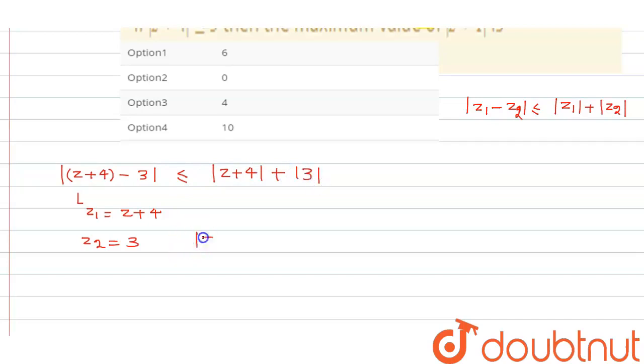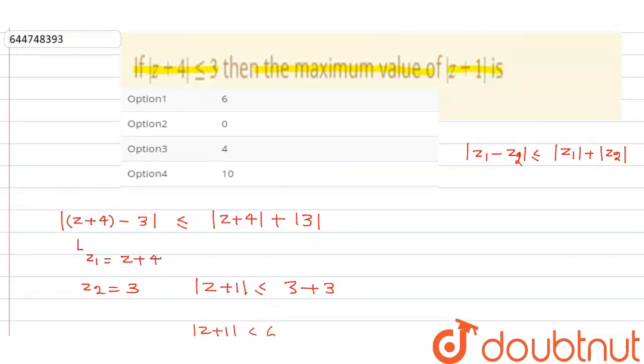So basically this becomes what, mod of z plus one less than equal to, value of this thing is what, three, and this is also three. That means what, mod of z plus one less than equal to six.